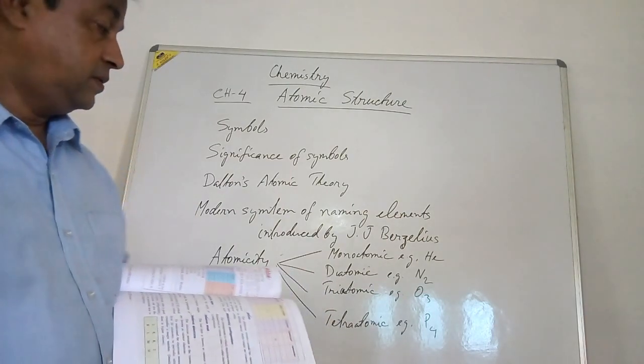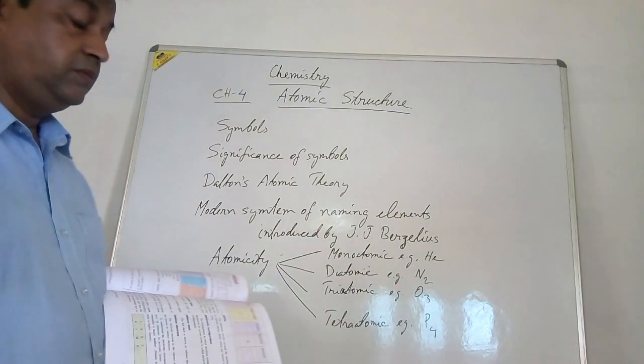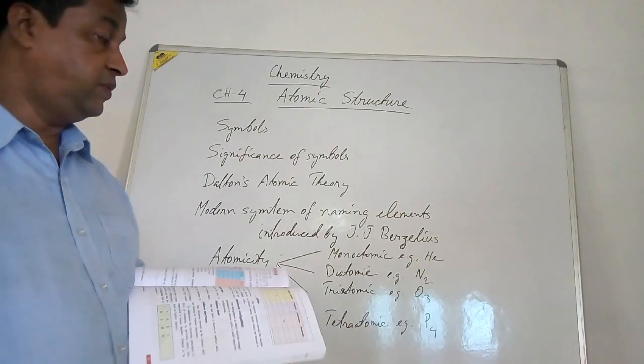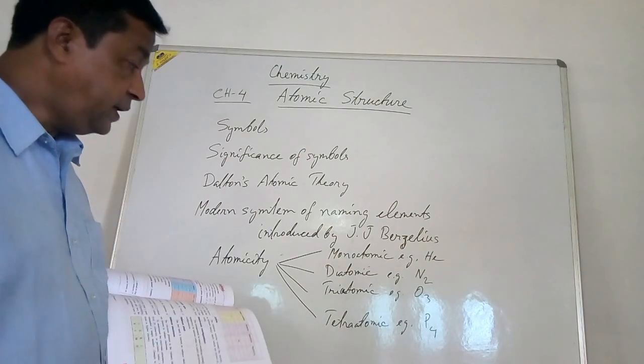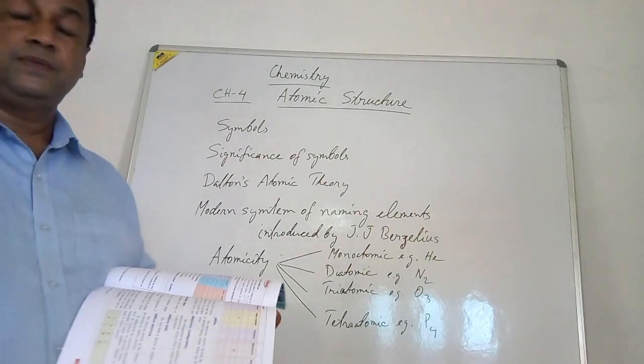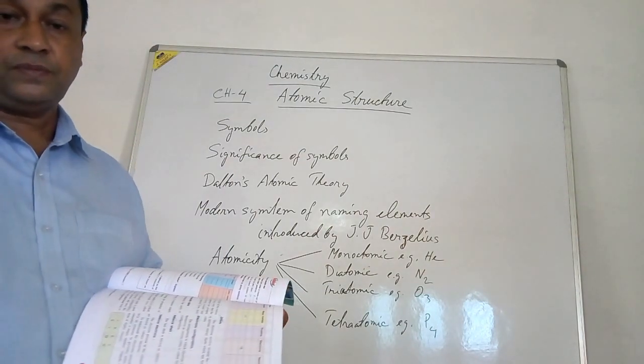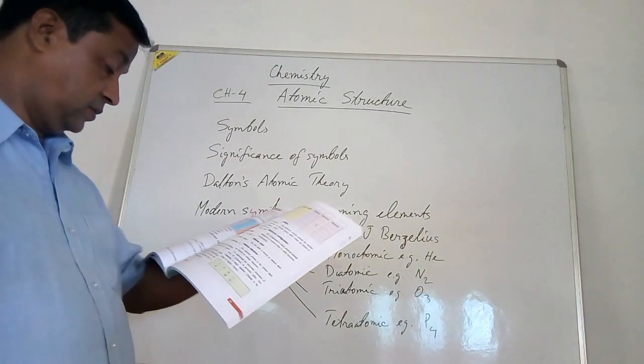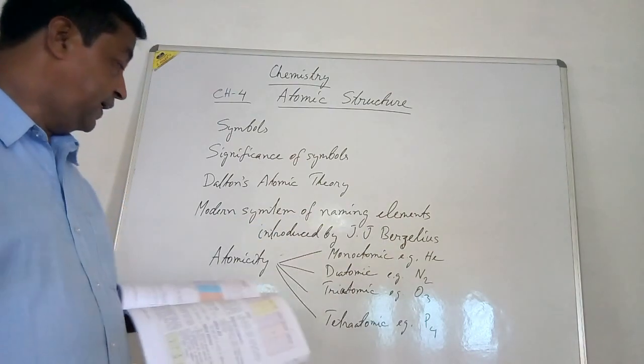Next is triatomic — there will be three atoms in one molecule of that substance. For example, ozone is triatomic because it has three atoms in its molecule.